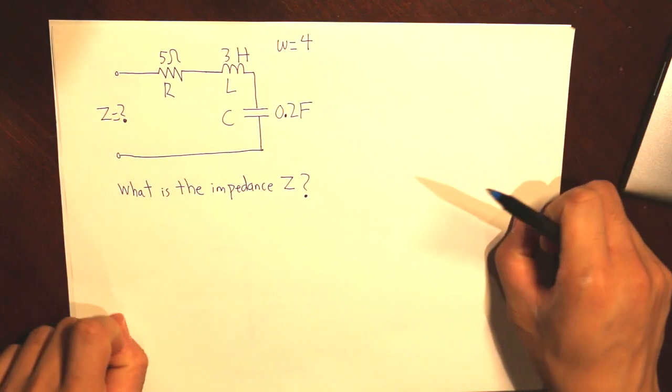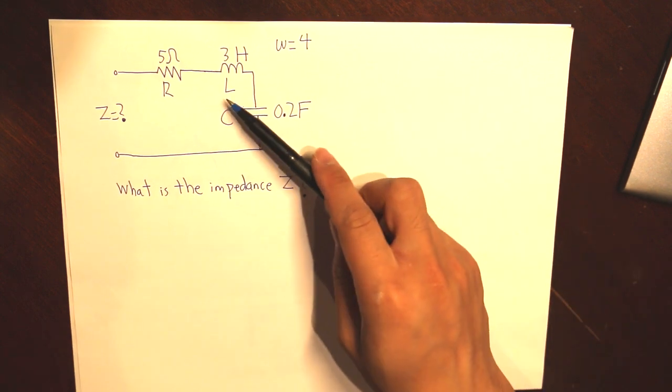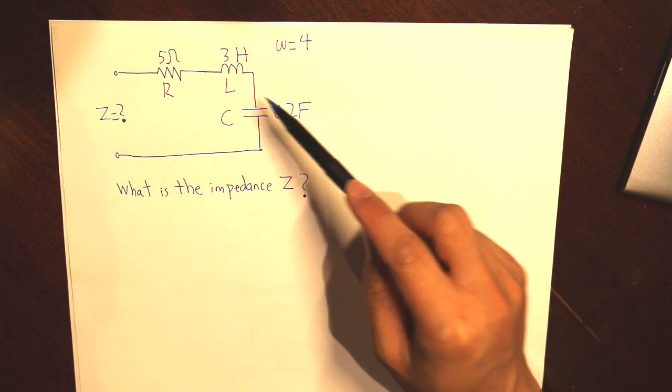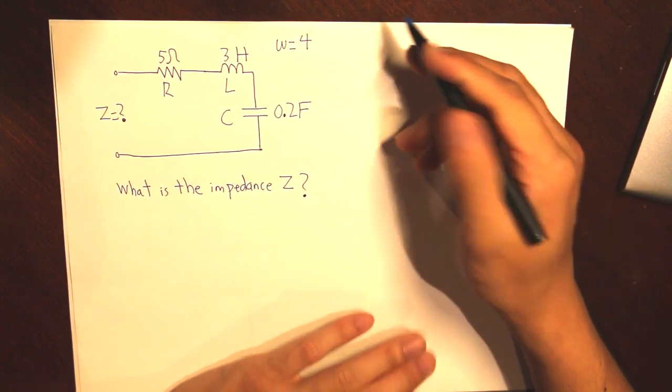So getting back to this topic. L is equal to 3H and C is equal to 0.2F. Now let's find what these values are.